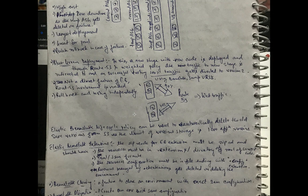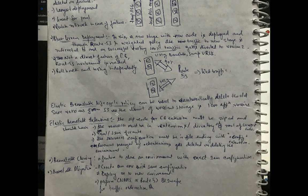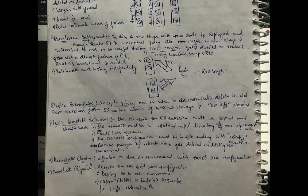Another important concept is the Elastic Beanstalk Lifecycle Policy. We can use this policy to define rules for automatically deleting old application versions. This is needed because AWS limits applications to 1,000 versions. By defining a lifecycle policy, older versions that are no longer in use can be deleted automatically after a certain time.